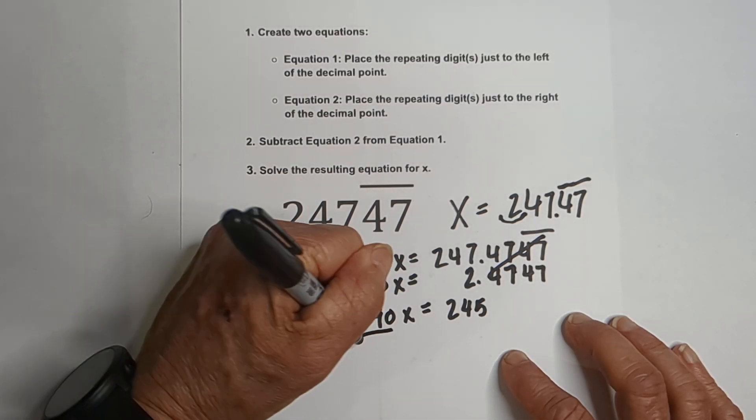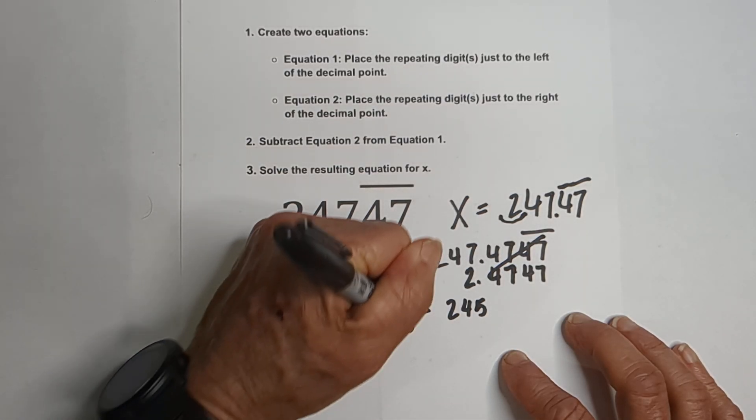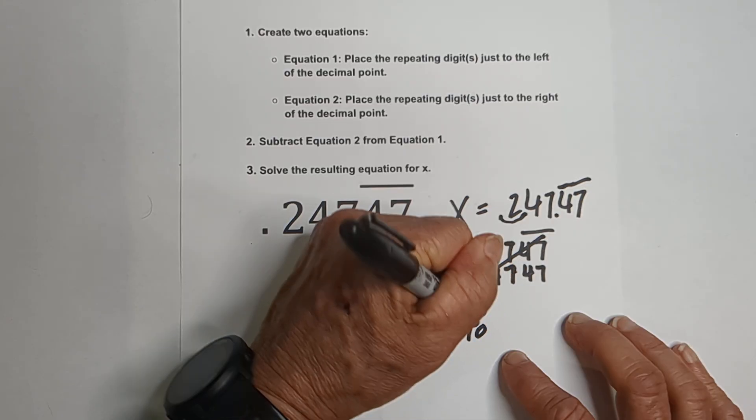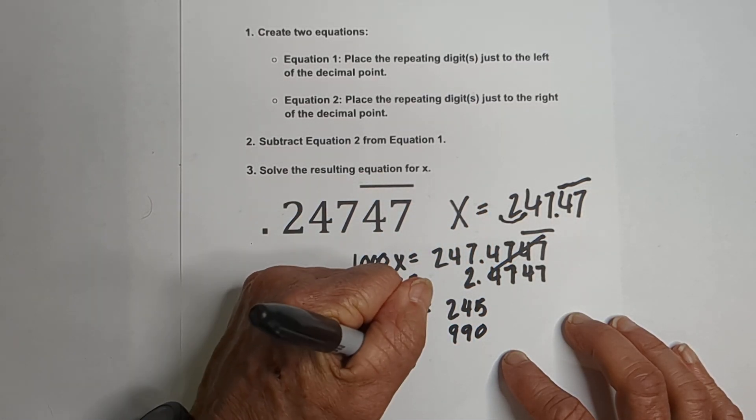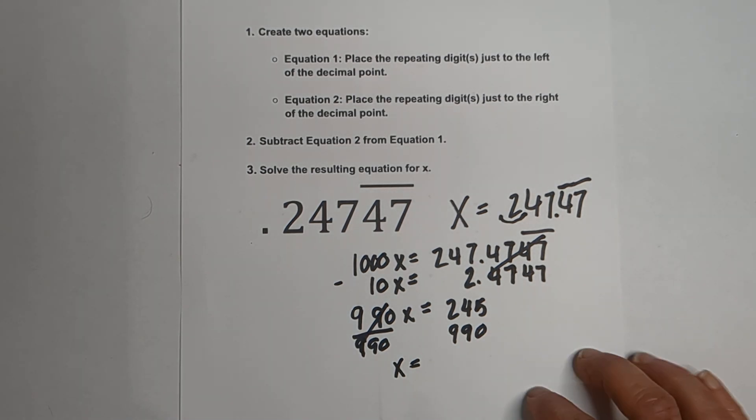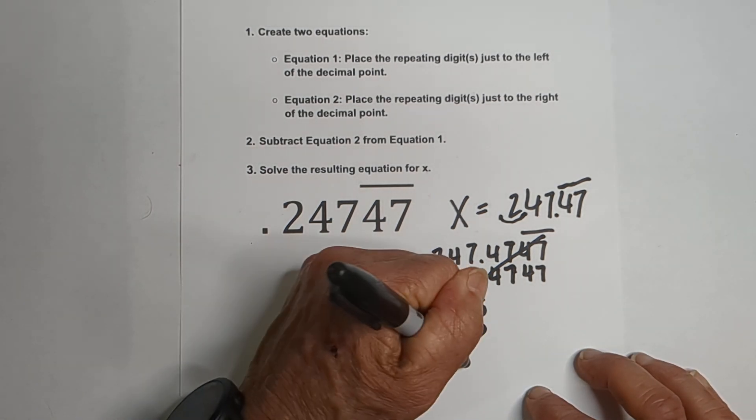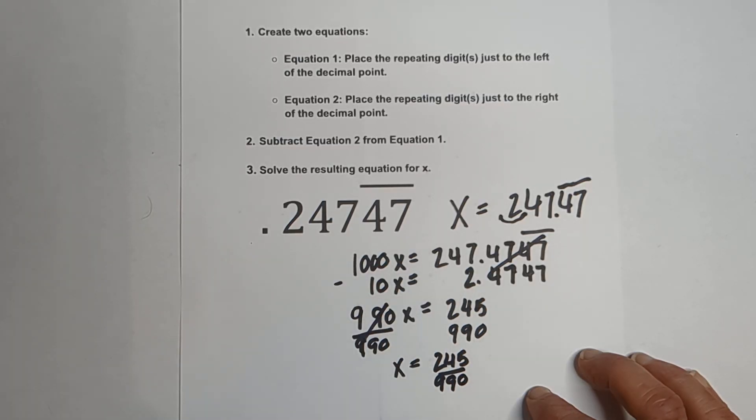Okay, now let's solve for X. And these cancel, so we have X equals 245 over 990.